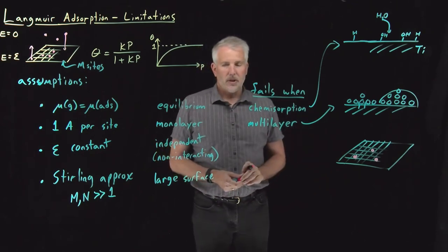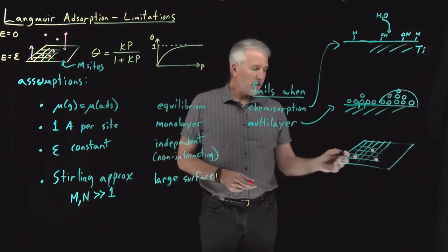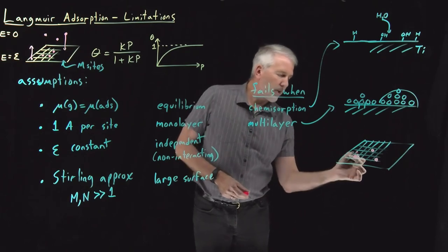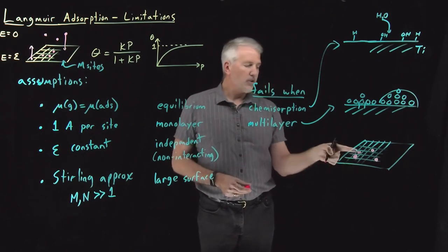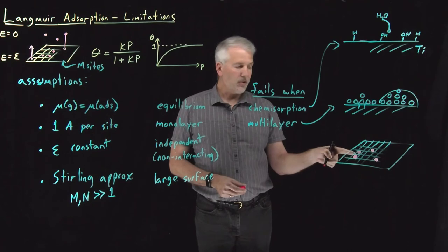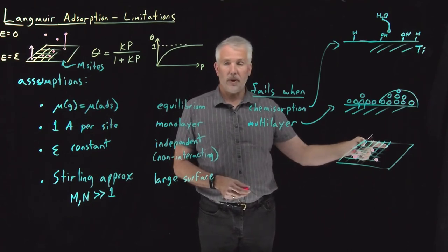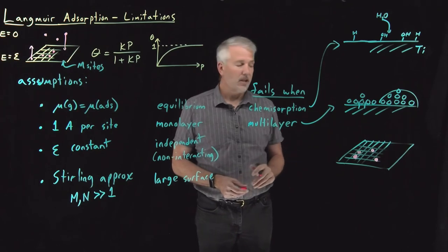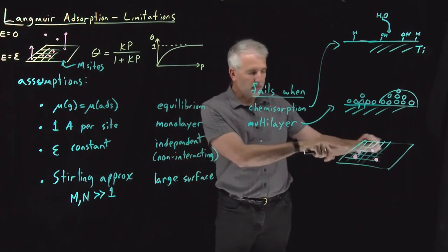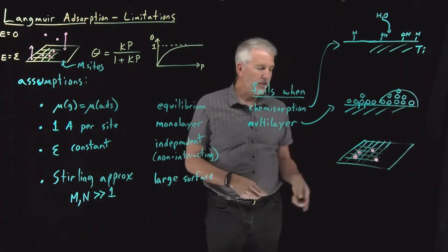As I adsorb more and more molecules onto the surface, it may in fact be true that a molecule adsorbing right next to another molecule, if they have a favorable interaction, that may be more probable than adsorbing far away and not interacting with other species. So I may find that what I get is not random adsorption at random sites on this surface, but they may tend to cluster.